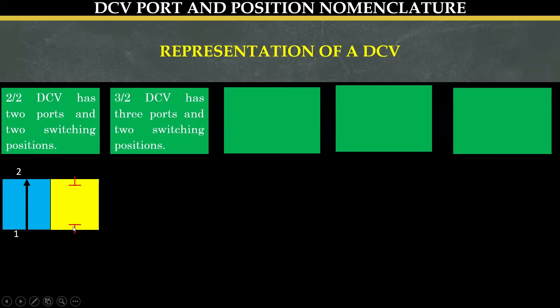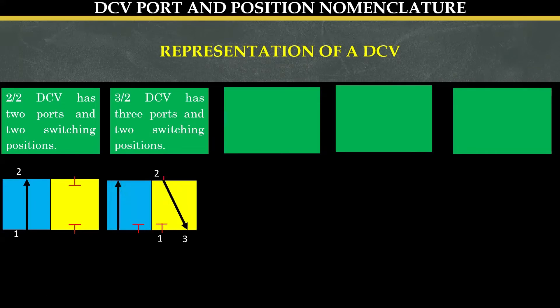A three by two direction control valve has three ports and two switching positions. Blue color and yellow color are the two positions, and one, two, and three are the three ports.